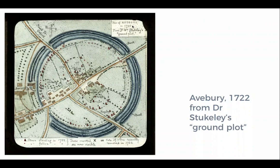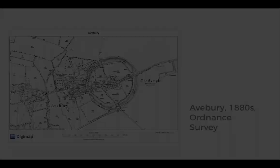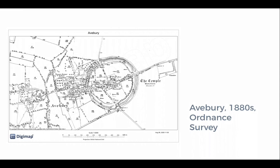Moving through time: Avebury 1722, from a ground plot used to show the positions of the stones, now mixing both the stones and the more modern buildings that accompany them. Then we move up to the Ordnance Survey. Ordnance surveys are lovely and a very familiar visual format — this one is from the 1880s, but you would not be surprised if you opened an Ordnance Survey and saw something very similar to this. If you have studied maps or gone walking, you will quickly recognize the visual conventions employed. We'll be talking about those more in the map-making module.